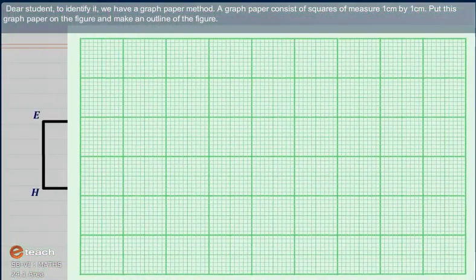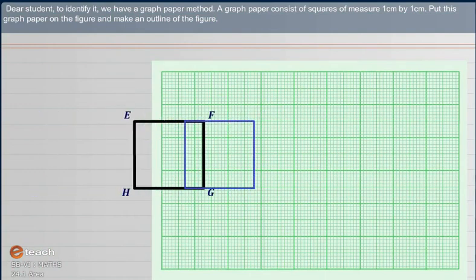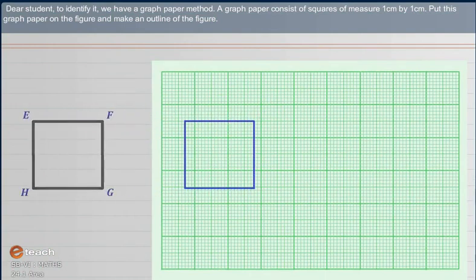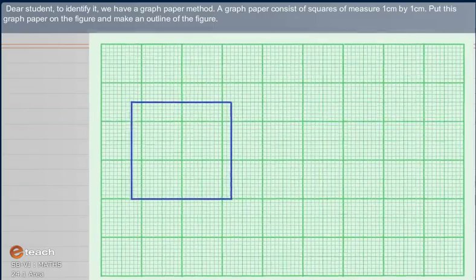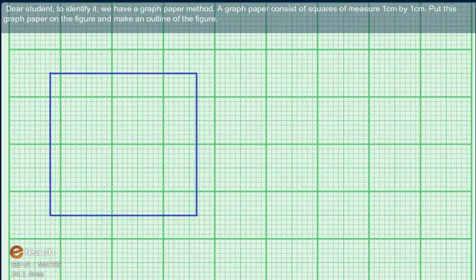Dear students, to identify it, we have a graph paper method. A graph paper consists of squares of measure 1 cm by 1 cm. Put this graph paper on the figure and make an outline of the figure.